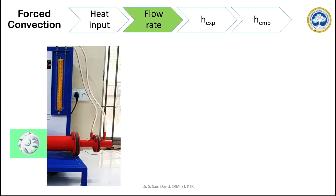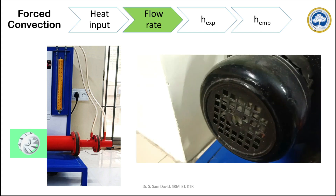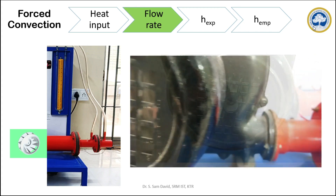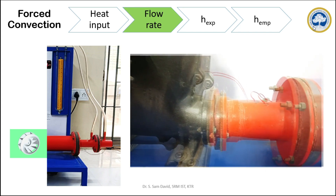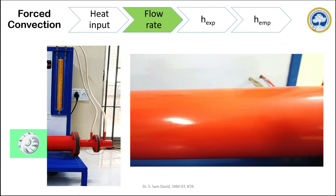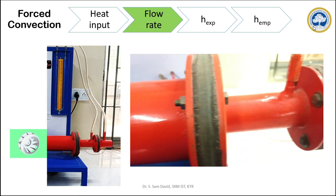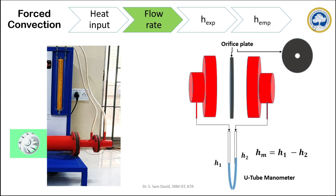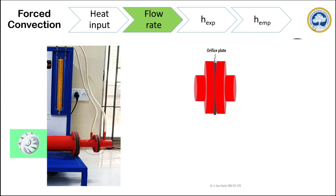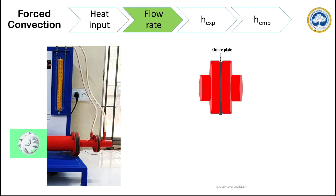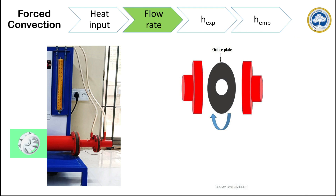The total process can be segmented into four stages. After calculating the heat input, the first step is to calculate the flow rate of the blower. To calculate the experimental and empirical heat transfer coefficients, we need to know the flow rate and velocity of the air. To find the flow rate, an orifice meter assembly is fixed at the end of the tubular section. Inside the orifice meter assembly, a circular orifice plate with a hole in the center is fixed using flanges across the pipeline.